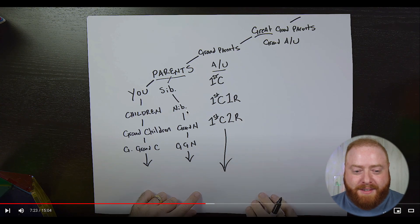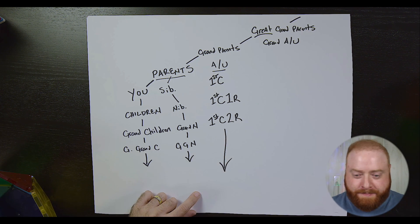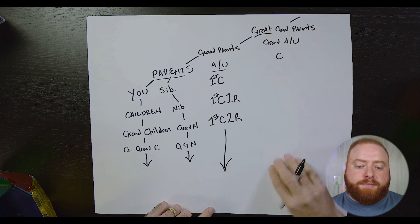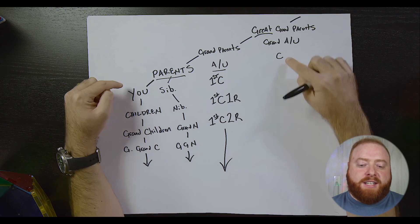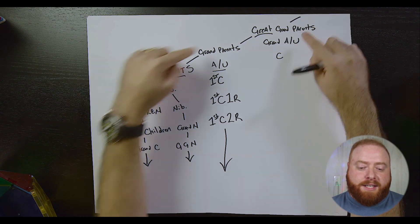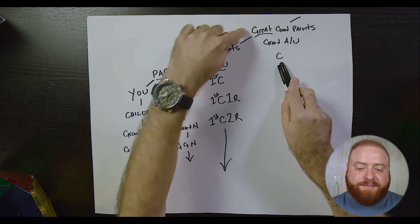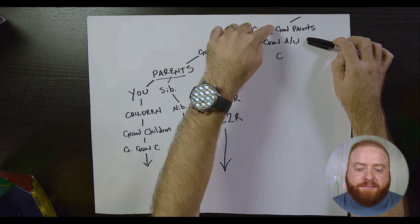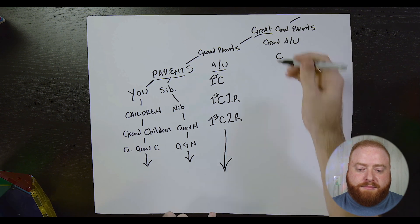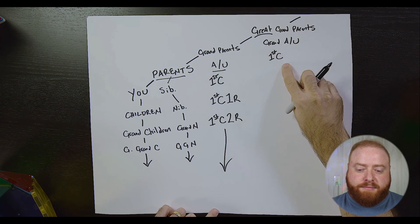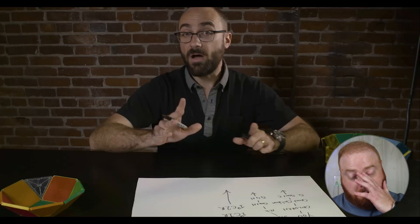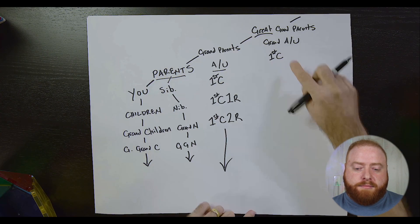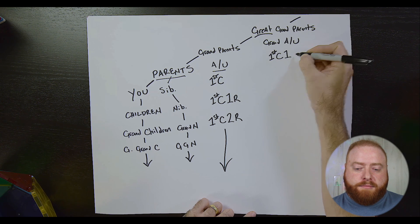This will continue adding one removal for each generation. Now let's talk about my grand-aunts and uncles. Their children will exist right down here, and it's going to be a cousin relationship because the most recent common ancestor we share — our great-grandparents — require journeys through at least one generation. I have to go through one, two to get there; they only have to go through one. The degree is always the smaller of the two journeys, but our journeys are of different lengths — so we are first cousins once removed.